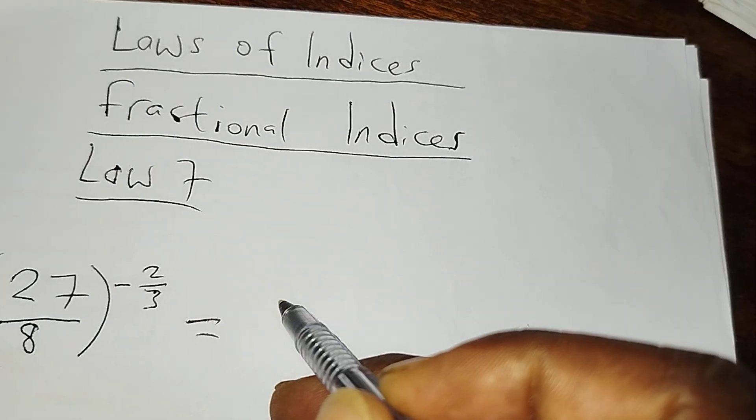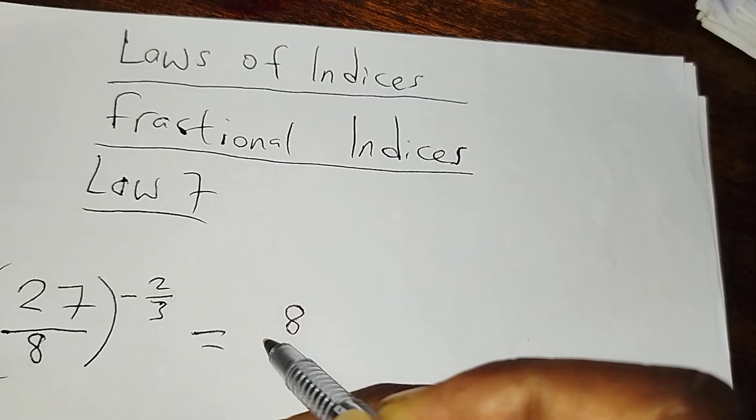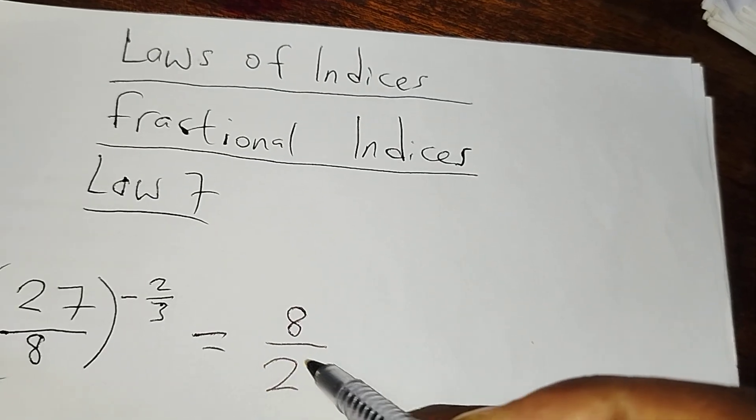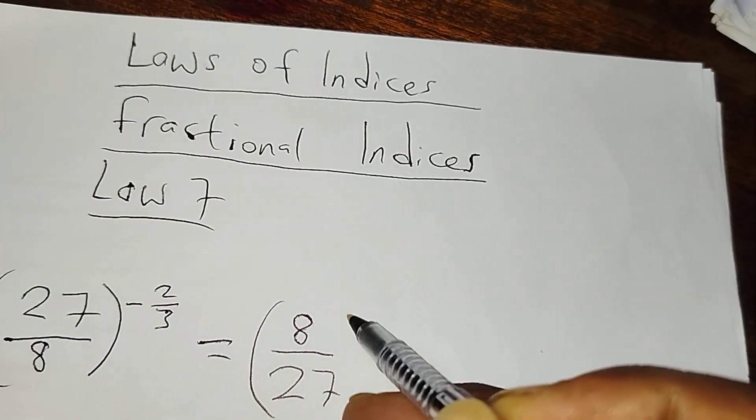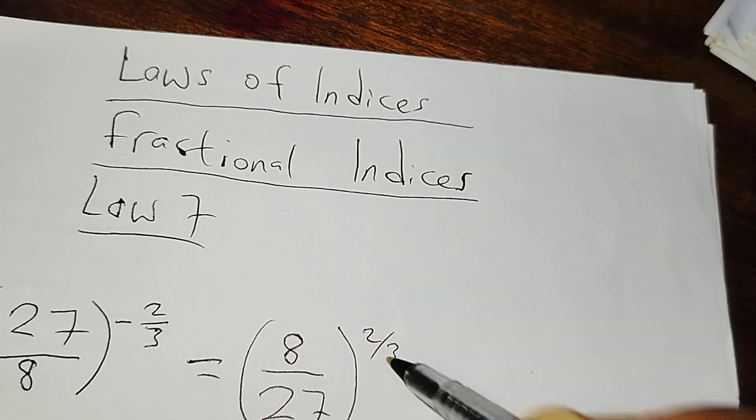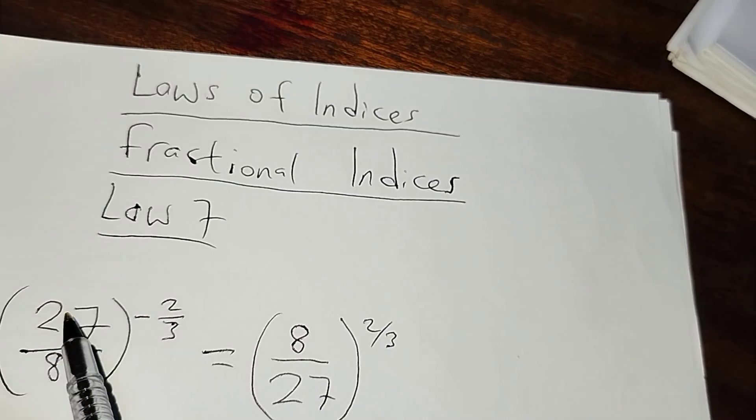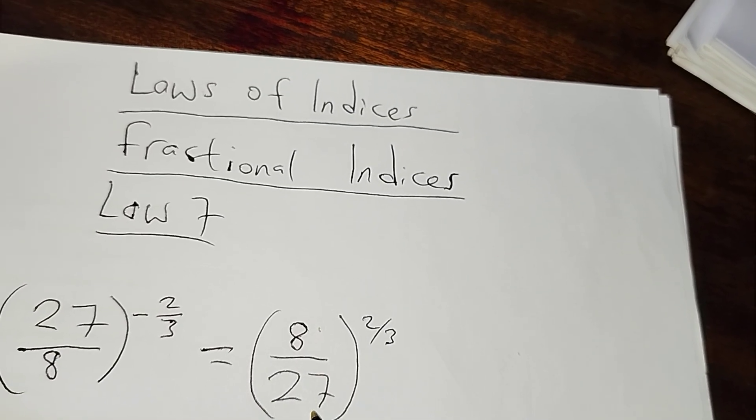We simply invert our fraction and write the inverse of the fraction which becomes 8 over 27 to the power two thirds. So notice here if you invert this fraction and write it as 8 over 27, you would have removed the negative sign on the fractional power or fractional index.